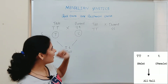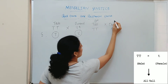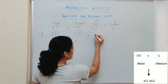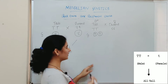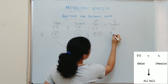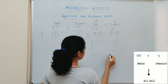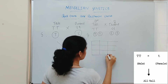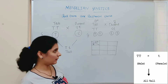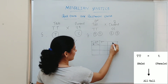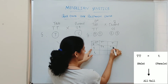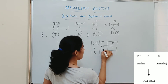The male tall plant produces pollen with the factor T, and the female dwarf plant produces eggs with the factor t. Drawing a Punnett square with male gametes (T, T) at the top and female gametes (t, t) on the left, all squares give genotype Tt. So all plants in this cross are tall.